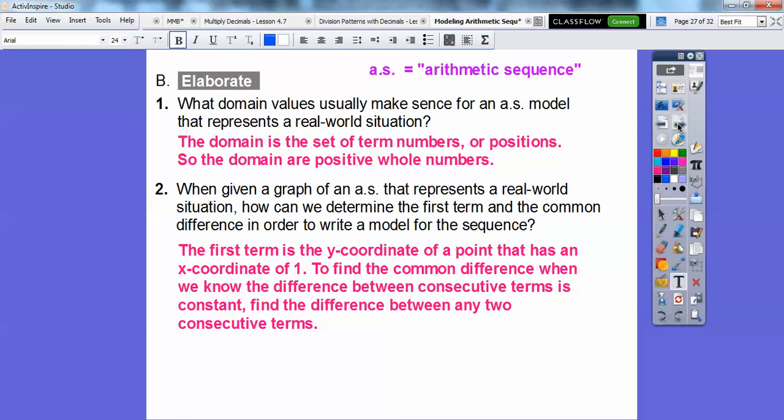When given a graph of an arithmetic sequence that represents a real world situation, how can we determine the first term and the common difference in order to write a model for the sequence? Well, the first term is the y-coordinate of a point that has an x-coordinate of one. So when we had those graphs and they gave us an x-y point, we look for that one comma something, and that first term is that something right there. It follows the coordinate of x equals one.